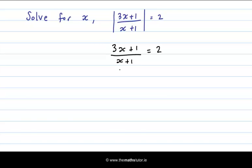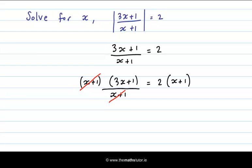Now I need to multiply both sides by this denominator down here, x plus 1. By doing that these two factors cancel out. And now multiplying both sides, we are just left with 3x plus 1 on the left and 2x plus 2 on the right.